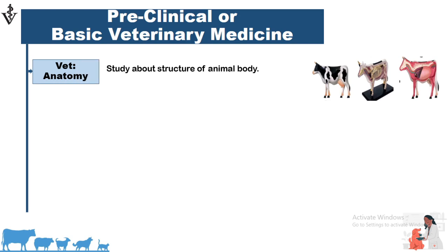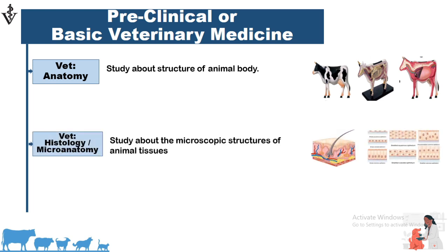Veterinary anatomy is a science in which we study about the gross structure of the animal body — structures which we can see with the naked eye, like bones, muscles, and different systems of the animal body. The second subject is veterinary histology, or micro-anatomy, which is a science in which we study about the microscopic structures of animal tissue.